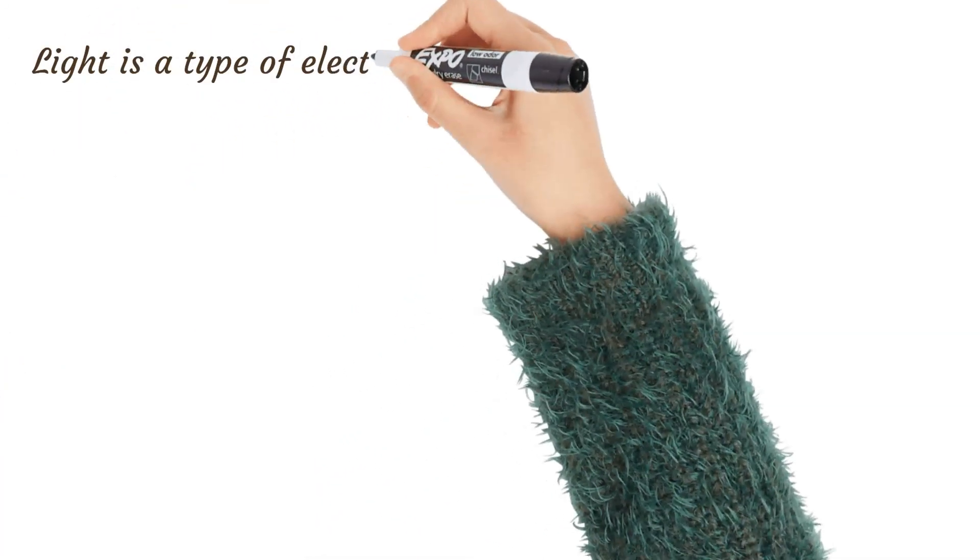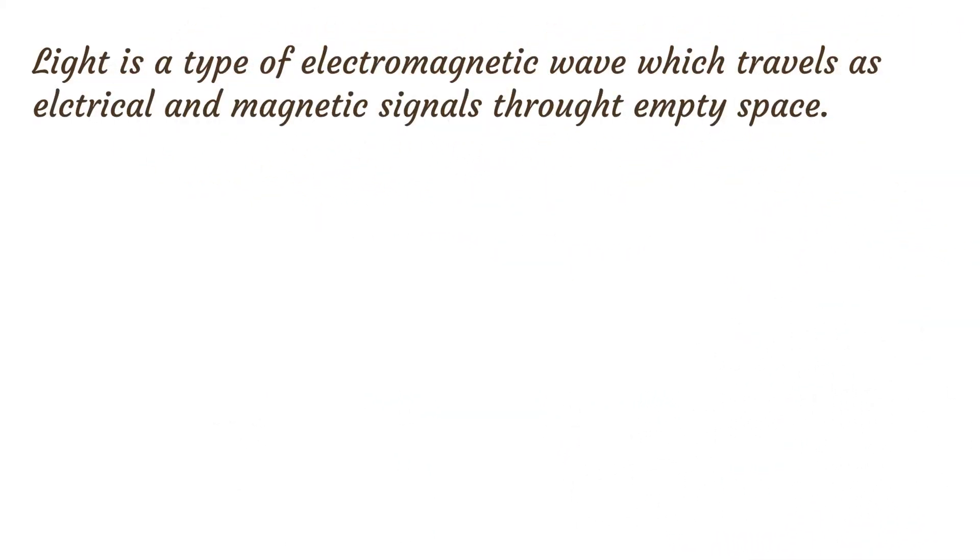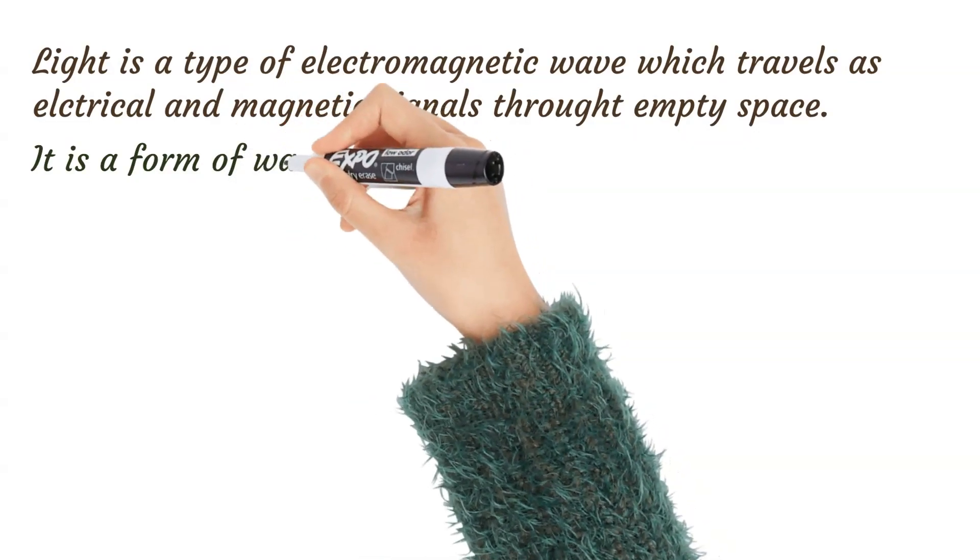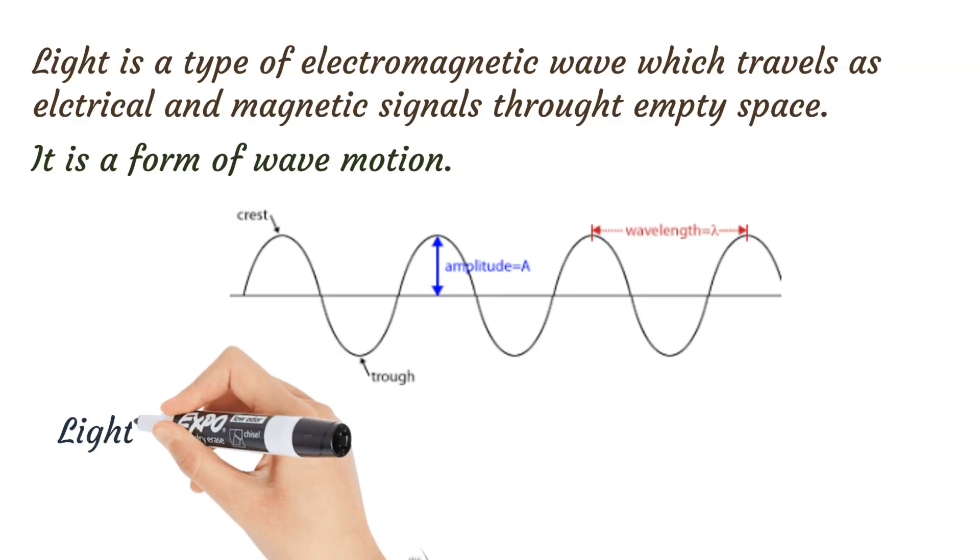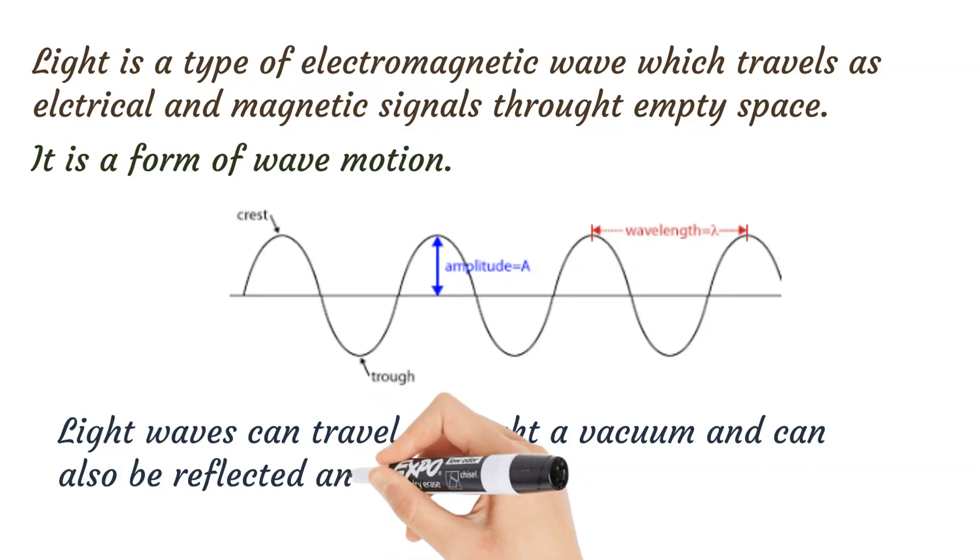Light is a type of electromagnetic wave which travels as electrical and magnetic signals through empty space. The signals are shown as a form of wave motion. Let's look at the diagram. In the diagram you see the motion in a waveform. The crest is the highest part, the trough is the lowest part. Light waves can travel through a vacuum and can also be reflected and refracted on surfaces.